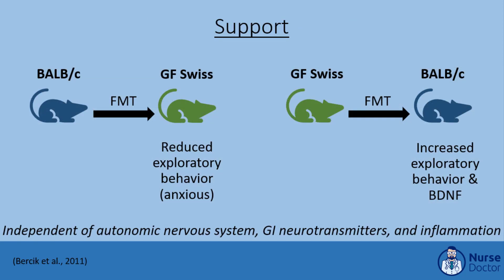In a study conducted by Bercik and colleagues in 2011, BALB/c or anxious phenotype and germ-free (GF) Swiss mice were used to examine anxiety. Fecal matter transplantation (FMT) from the more anxious BALB/c mice to the germ-free Swiss mice resulted in a reduction in exploratory behavior, denoting anxious behavior. On the other hand, FMT from the germ-free Swiss mice to the BALB/c mice resulted in an increase in exploratory behavior and levels of brain-derived neurotrophic factor (BDNF), a growth factor that stimulates synaptogenesis and neurogenesis and promotes neuronal survival. These findings were noted independent of autonomic nervous system, GI neurotransmitter, and inflammatory influence, suggesting that the gut microbiota may influence behavior independently.